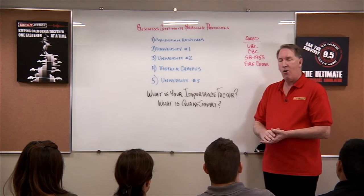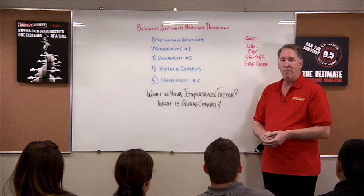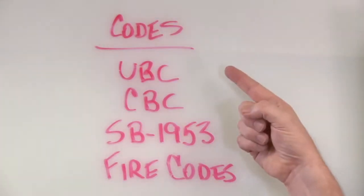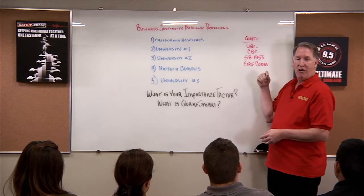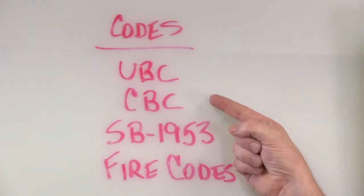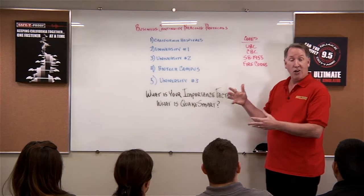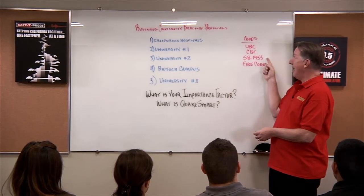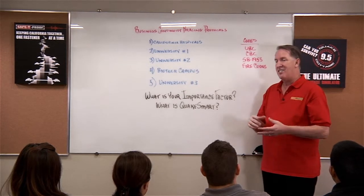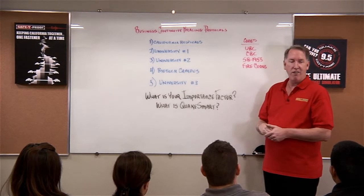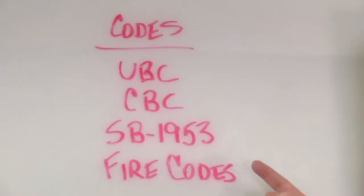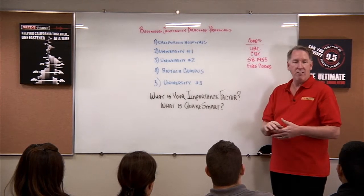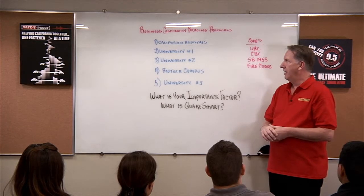There are lots of codes and requirements to choose from. It gets complicated when deciding what to do. We have the UBC, the Universal Building Code, the CBC, the California Building Code. There are additional codes for each of those for existing buildings. We have something called SB1953 — that's the seismic code created for California hospitals — and there are lots of fire codes that can vary by what they require and how they're enforced based on the community you're located in.